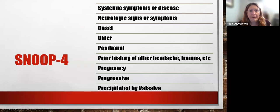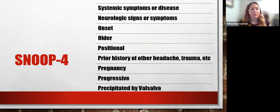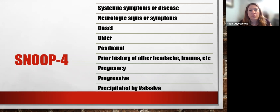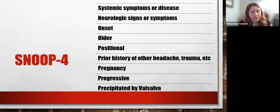We have a mnemonic in headache medicine called SNOOP-4. It's been further developed over the years — there's SNOOP-5 and more — but I'll stick with SNOOP-4 as it's easier to remember for non-headache providers. SNOOP-4 stands for: systemic symptoms or disease, neurologic signs or symptoms, onset, older age, positional component, prior history of headaches, pregnancy, progressive features of headache, and headaches precipitated by Valsalva.